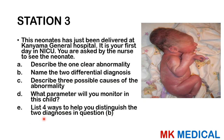Moving on to Station 3. This neonate has been delivered at Kinyama General Hospital. It is your first day in NICU. You are asked by the nurse to see the neonate. Describe the one clear abnormality. Name two differential diagnoses. Describe three possible causes of the abnormality. What parameter will you monitor in this child? List four ways to help you distinguish the two diagnoses in question B. You may pause the video, have a look at the picture, and here comes the answer.